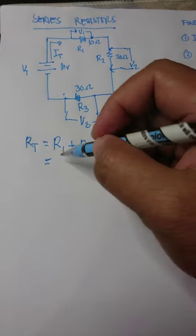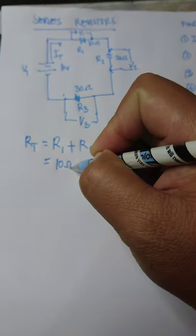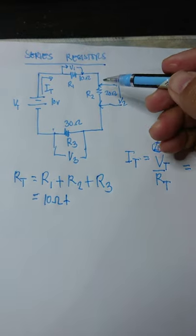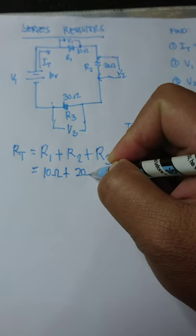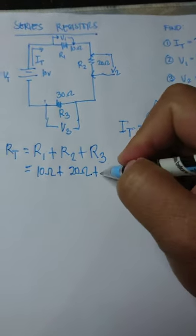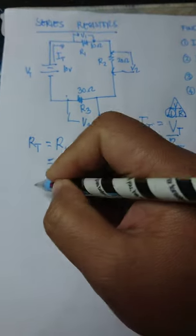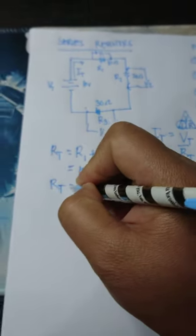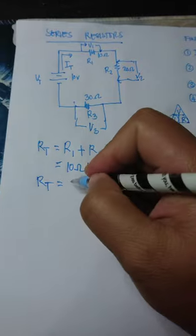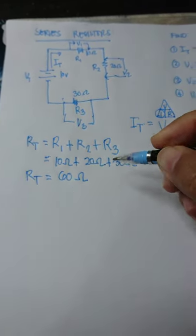We just use the formula R1 plus R2 plus R3. Then we substitute the values of each resistor: 10 ohms for R1, 20 ohms for R2, and 30 ohms for R3. We add up these three quantities and get 60 ohms for the total resistance.